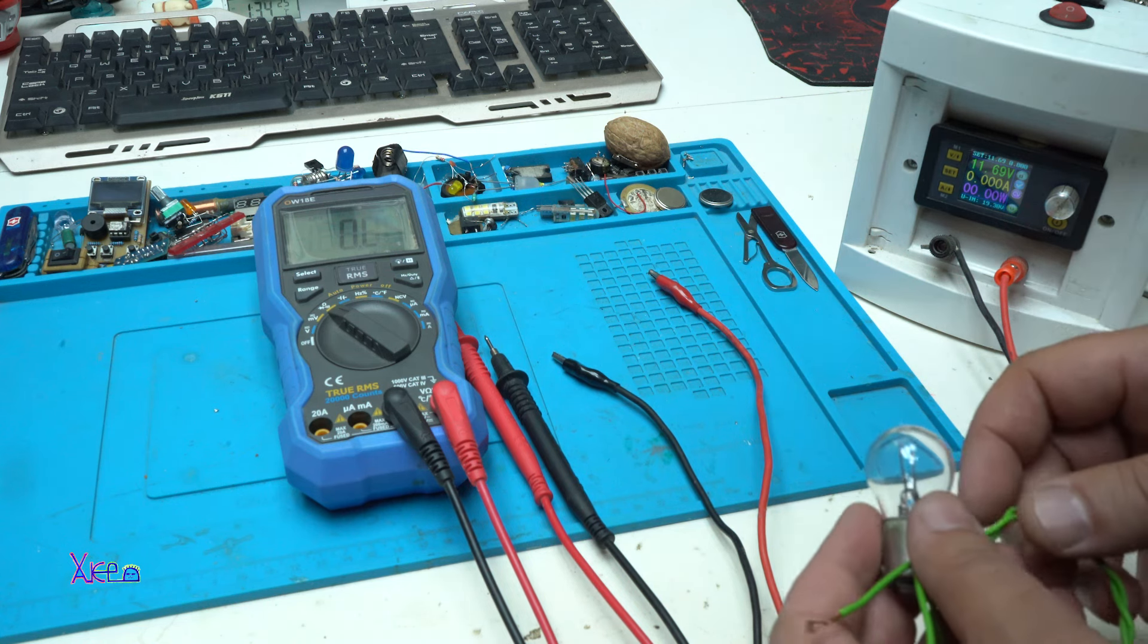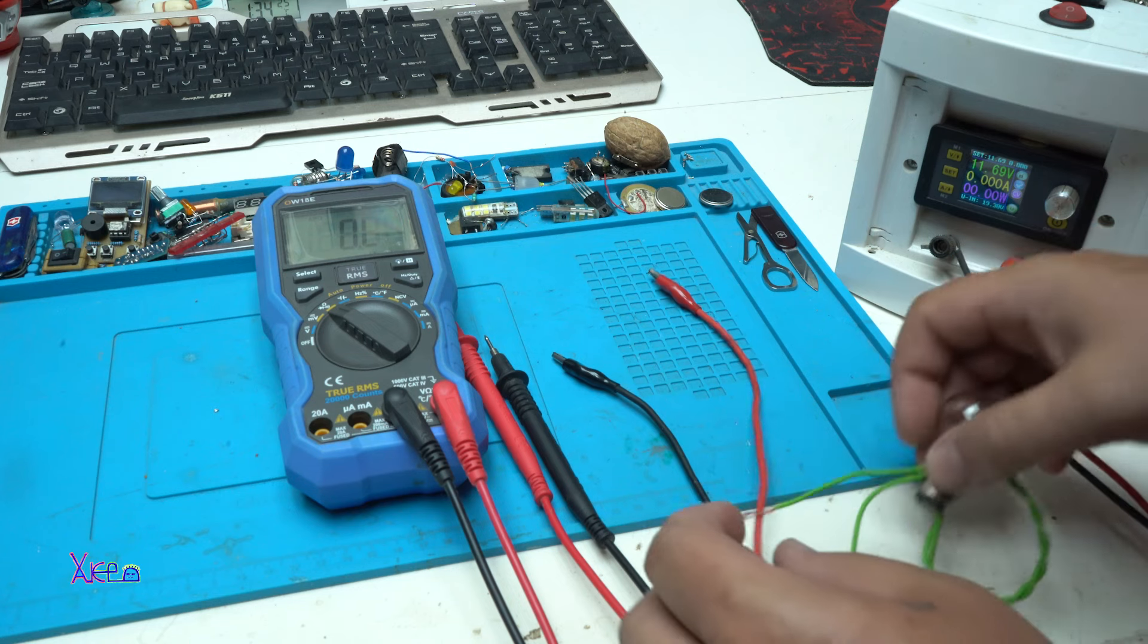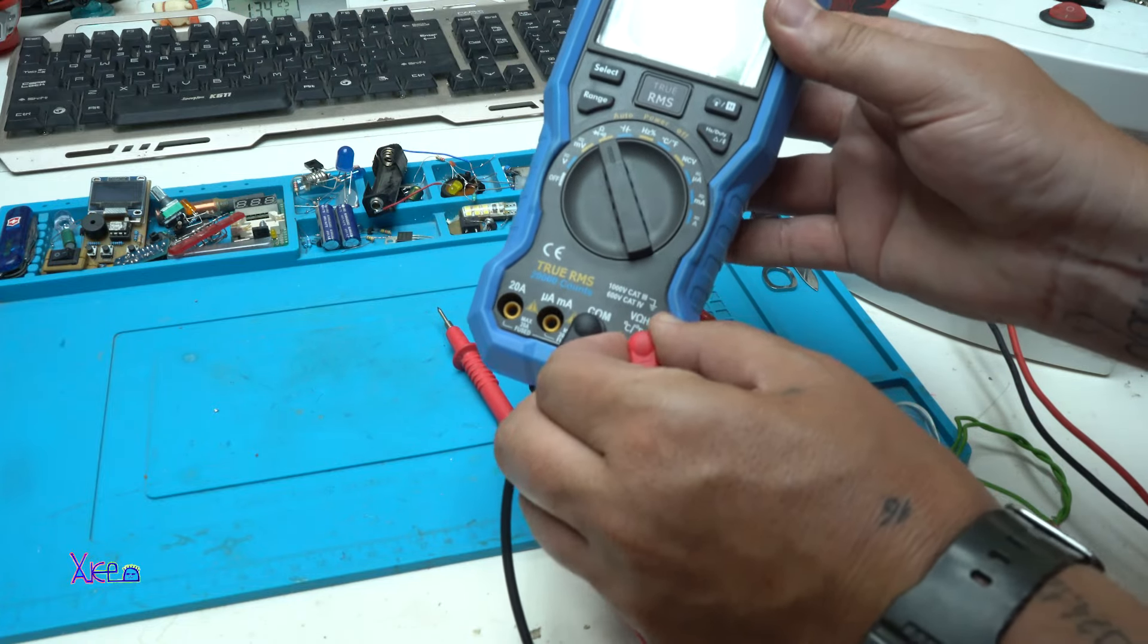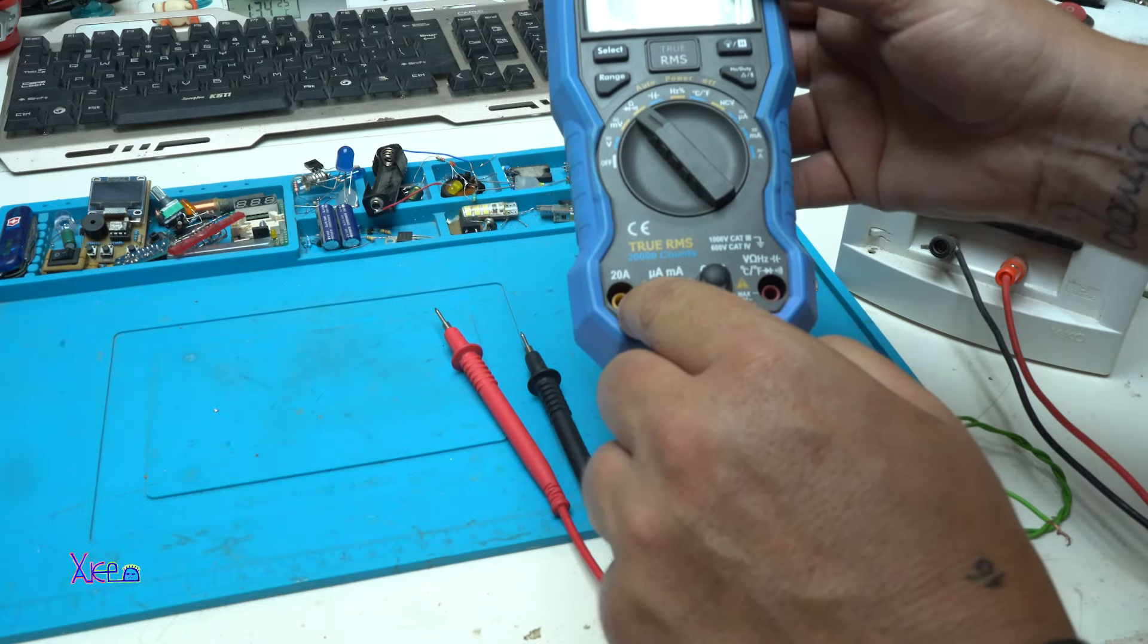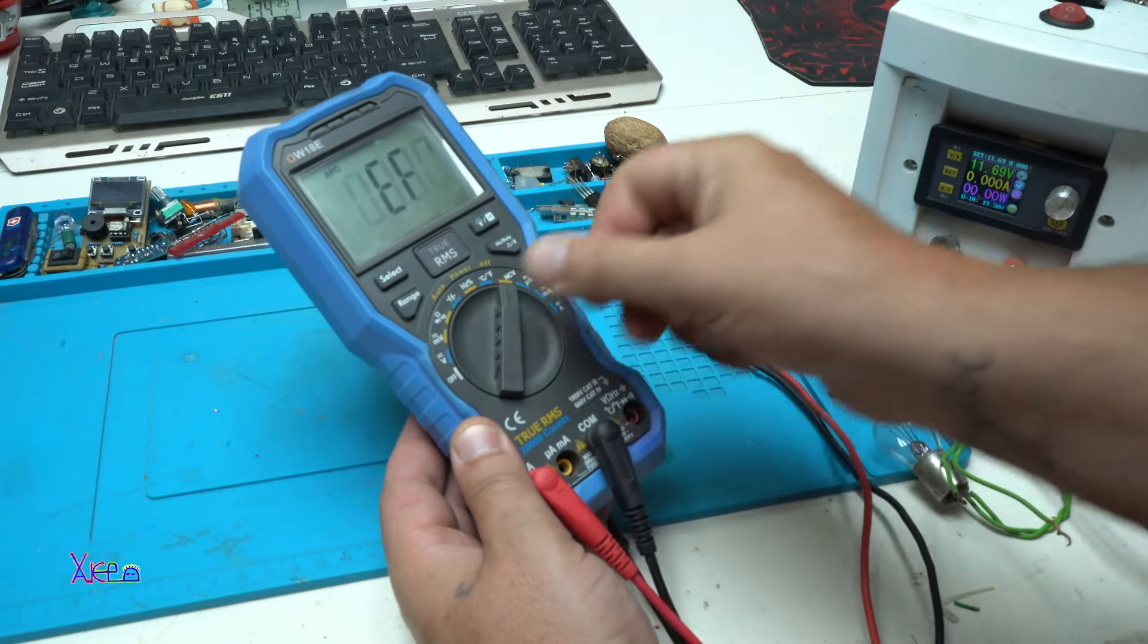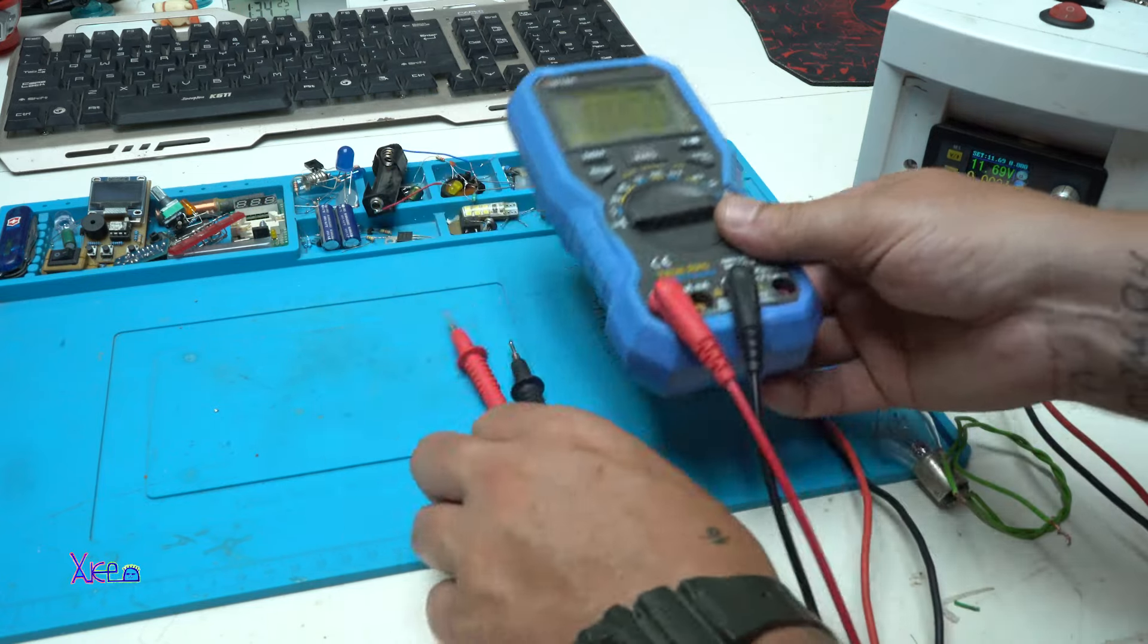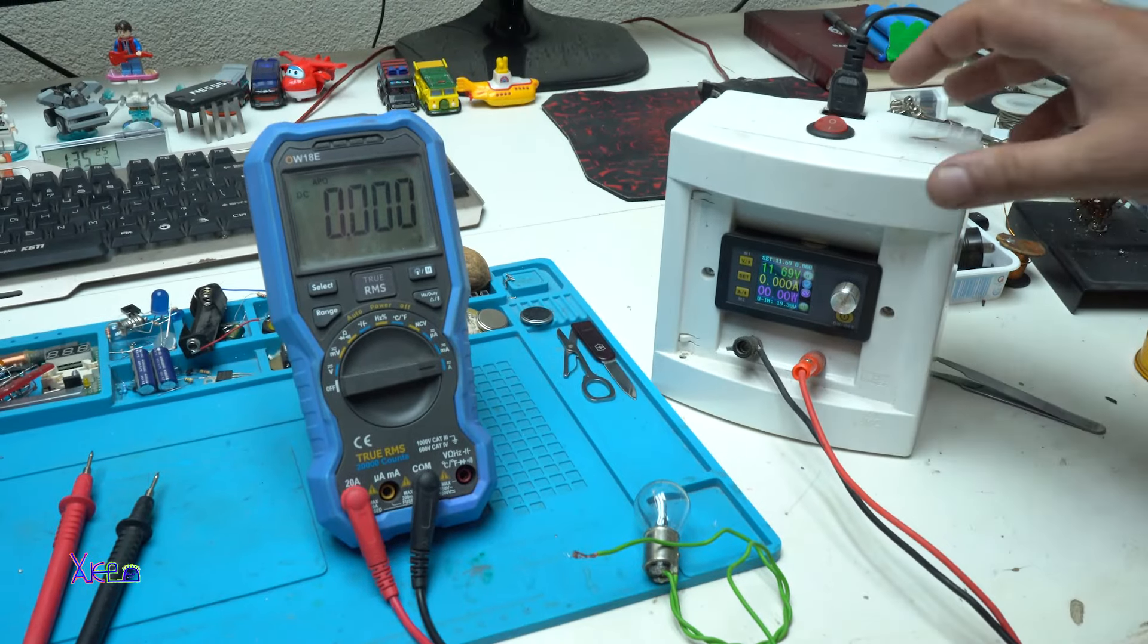I want to show you about how you can measure current with the digital multimeter. First thing that you need to do is to change the positive probe to the 20 amp socket. And next is to select the cursor to amps. And to be set on DC. Everything is set up.